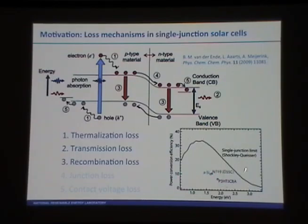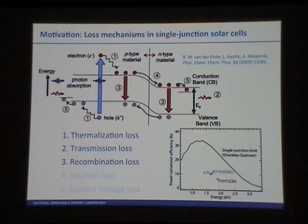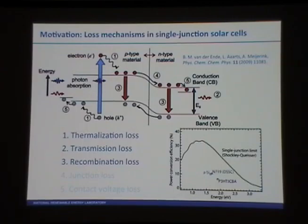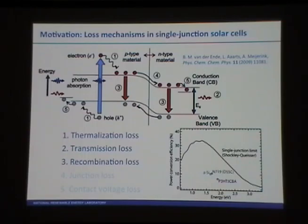You can have thermalization, where any energy above the bandgap of the material is lost predominantly as heat. Transmission losses, where any photons below the bandgap of the material pass straight through the device. Recombination losses, where photo-excited carriers are not harvested and simply recombine to the ground state. And then a couple of other losses: junction loss and contact voltage loss. I'm not going to talk about the last two; I'm going to touch on the first three. I also show the Shockley-Queisser limit for a single junction solar cell and the maximum power conversion efficiency that can theoretically be obtained for a given bandgap.